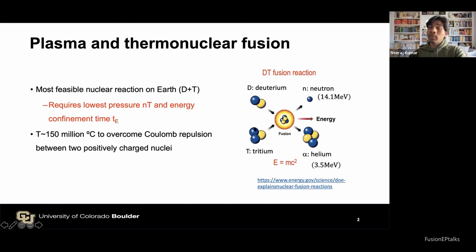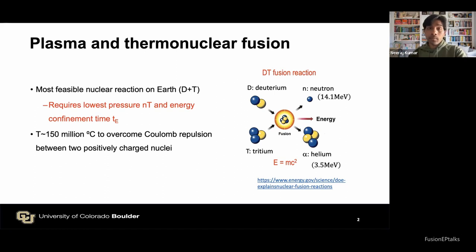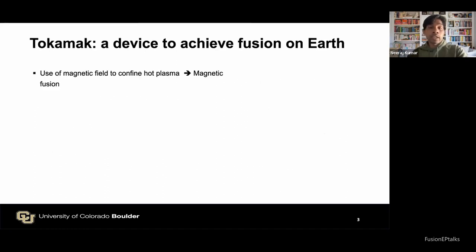As we can see, deuterium and tritium fuse together to form a heavier nucleus such as helium and a neutron, releasing energy via Einstein's mass-energy equivalence. To keep the temperature up, we need to heat the plasma, and for the reaction to be self-sustained, helium must confine and transfer its energy to the deuterium-tritium fuel, since the neutron is neutral and collides much less.